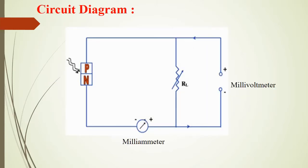This is the circuit diagram which we are going to use to determine the VI characteristic of a solar cell. This is a solar cell across which we are connecting a variable load resistor. In series, we are connecting a milliammeter. Parallel to the solar cell and the load resistor, we are connecting a millivoltmeter.